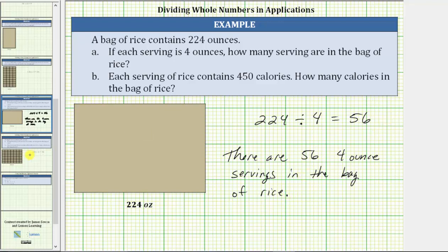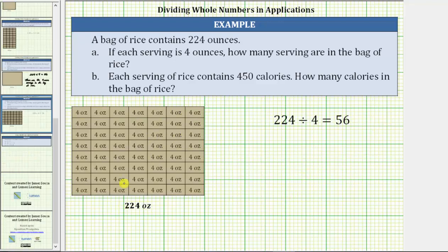To model the quotient, if we let this rectangle represent 224 ounces of rice, and then we cut or partition the rice into four-ounce servings, there will be a total of 56 four-ounce servings, as shown here.